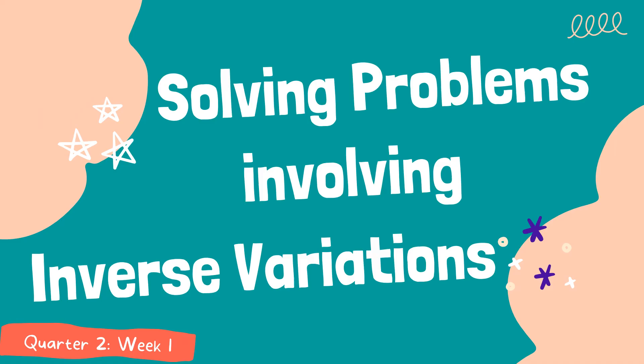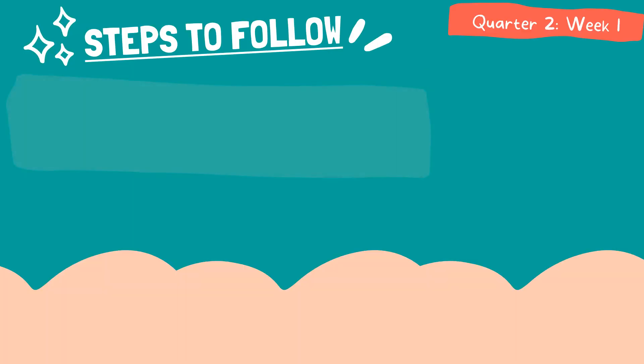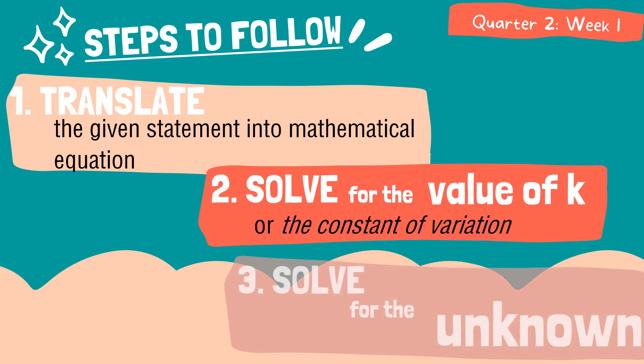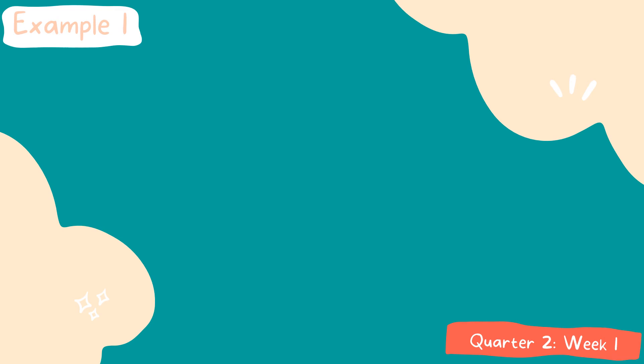In solving problems involving inverse variations, we will follow the same procedure. First is to translate the given statement. Second is to solve for the value of K. Third is to solve for the unknown. On the second step, it will be easier because we will simply get the product of the two variables present, since the product in this type of variation is constant.